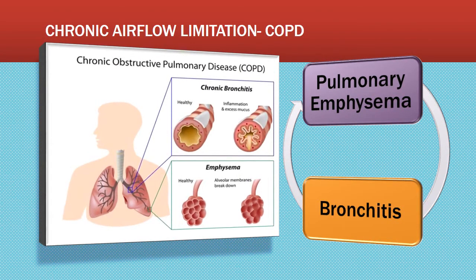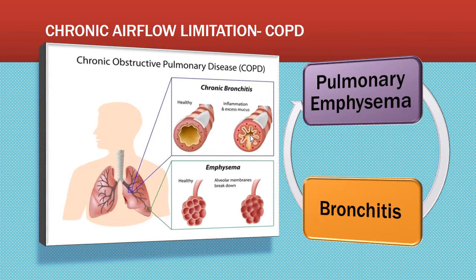COPD, chronic obstructive pulmonary disease, includes chronic bronchitis, which is an inflammation of the bronchi and bronchioles caused by chronic exposure to irritants, especially tobacco smoke. It triggers inflammation and vasodilation, congestion, mucosal edema, and bronchospasms. This is more chronic than asthma. Chronic inflammation increases the number and size of mucus glands, bronchial walls thicken, small airways become blocked, enlarged areas become narrow, PaO2 decreases, and PCO2 increases.